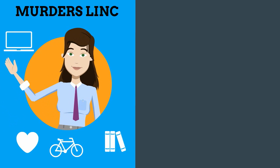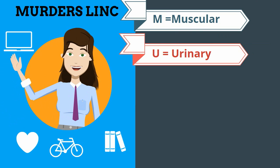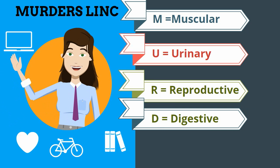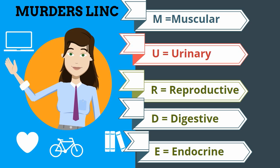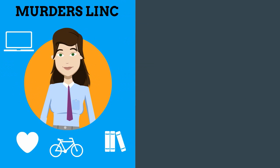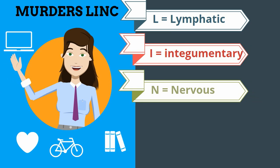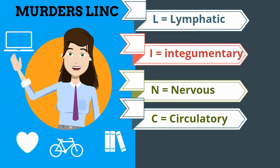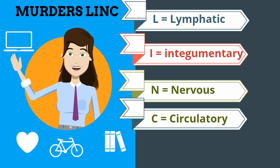The first mnemonic device will be 'MURDER'S LINK.' The M stands for Muscular, U for Urinary, R for Reproductive, D for Digestive, E for Endocrine, R for — then L is Lymphatic, I is Integumentary, N is Nervous, and C is Circulatory, or you may call it Cardiovascular.